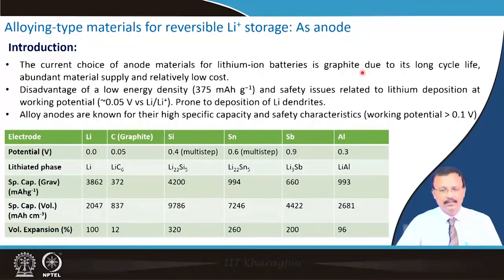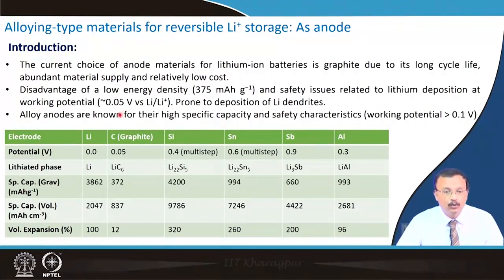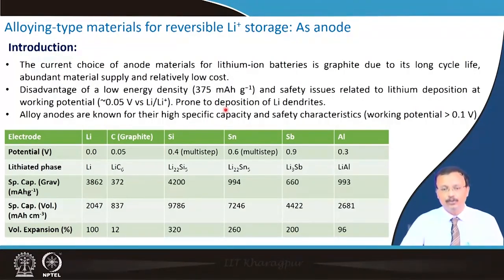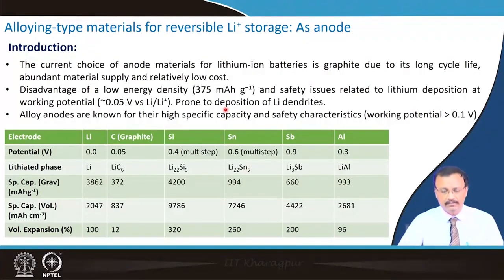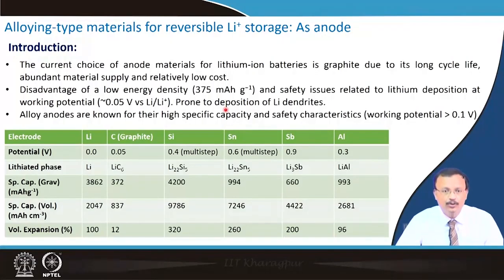The disadvantage is their low energy density. In particular, the capacity is only a maximum of 375 milliampere-hour per gram. There are also safety-related issues due to the deposition of lithium, particularly at the working potential which is very close to 0 volt versus lithium redox. It is prone to the deposition of lithium dendrite at that low voltage instead of forming the alloy. At low voltage, the formation of lithium deposition and under-potential deposition forming of lithium alloy are all applicable.